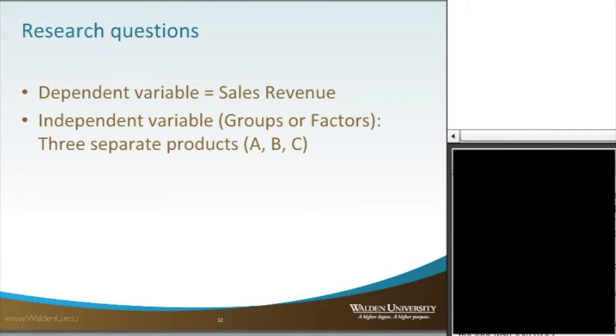We start with our dependent variable, which is sales revenue, which is on a scale, and then our independent variables, or groups, or factors, we have three separate products A, B, and C.